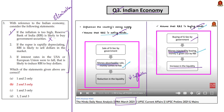Since it is a three-statement question, we apply the elimination technique. We found that statement 1 is incorrect, and option B is the only option which does not have statement 1 in it. So the correct answer is option B — 2 and 3 only. If you had watched the 19th March 2021 analysis, you would have arrived at the right answer.